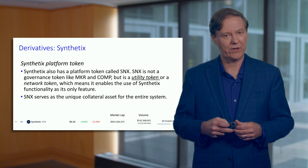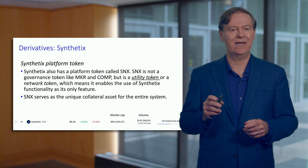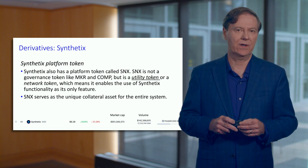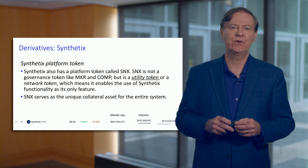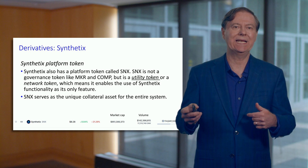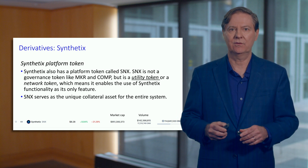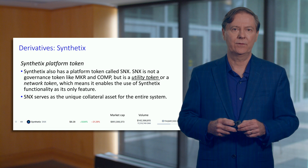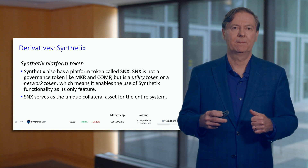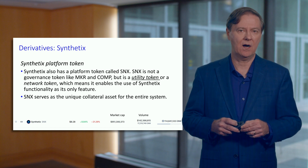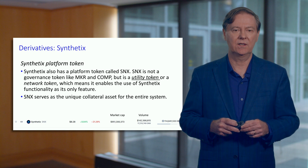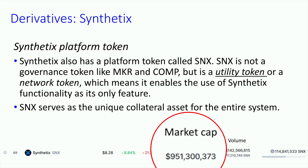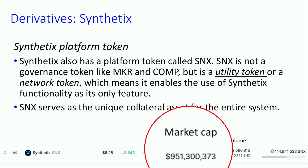There's also a platform token — SNX — and let's not confuse it for a governance token; it's more of a utility token used within the network. Recall the three different types of tokens: utility tokens, equity tokens representing shares of a liquidity pool, and governance tokens like Maker or COMP. SNX is a utility token, and at the time of this video its market capitalization was almost a billion dollars, and it's actively traded.